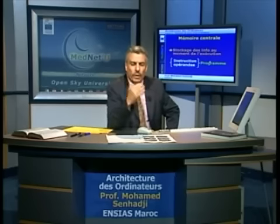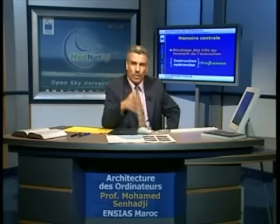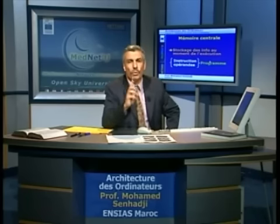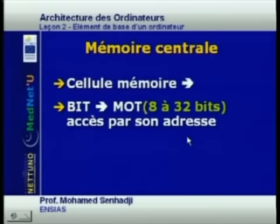A program is composed of instructions and data. The instruction part contains the instructions, and the data part contains the information treated by the program. All of these data and instructions must reside in the central memory at the moment of execution. This central memory is composed in general of cells, which are composed of bits or words according to the terminology used. A word is an ensemble of bits; it can be composed of 8 to 32 bits, and is accessible by an address. To access a memory cell, there is an additional signal called lecture-écriture (read-write), which comes from the command unit.